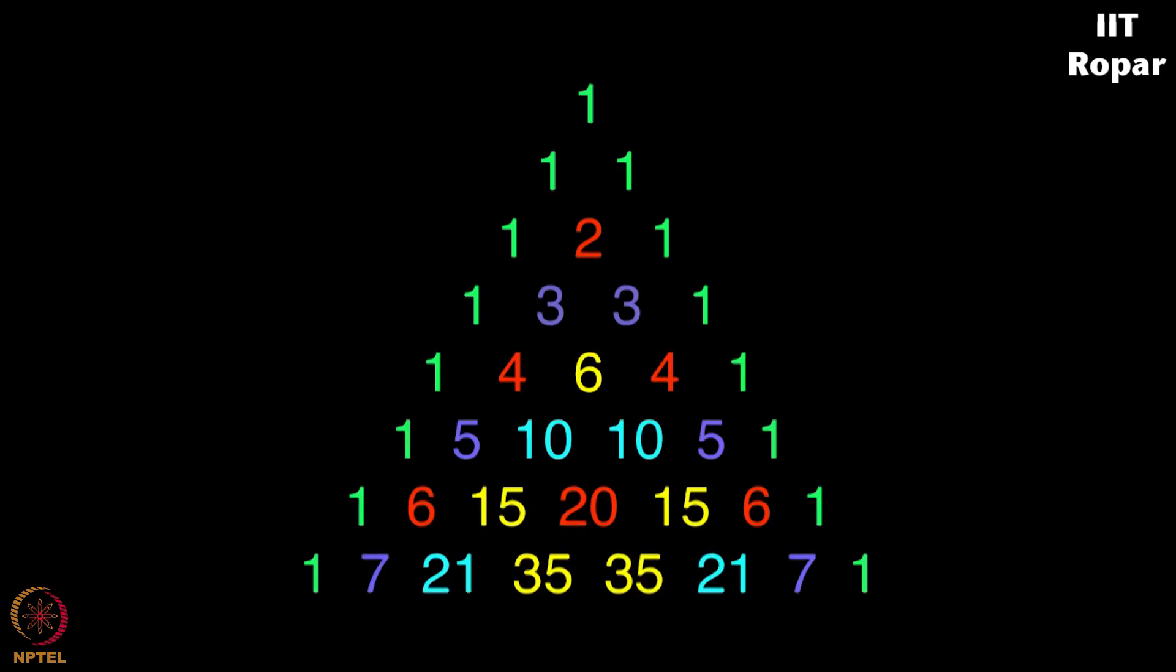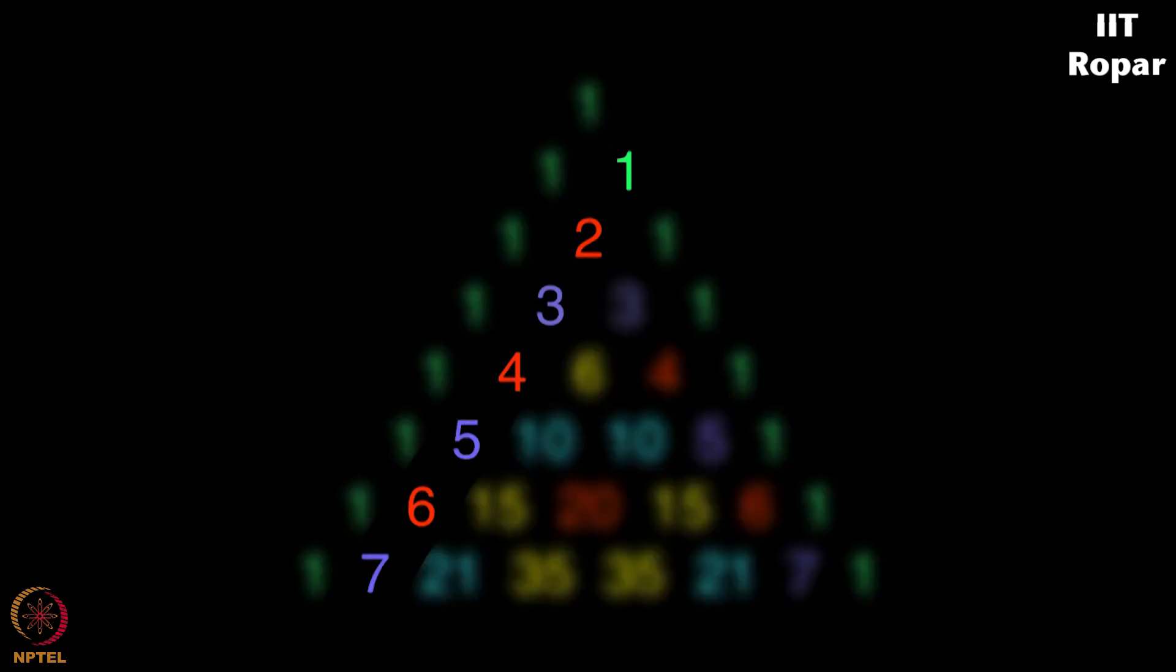The second diagonal, this one as you can see goes on as 1, 2, 3, 4, 5, 6 and so on, and this diagonal represents the natural numbers.